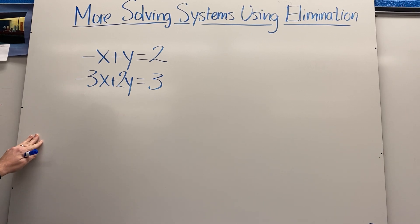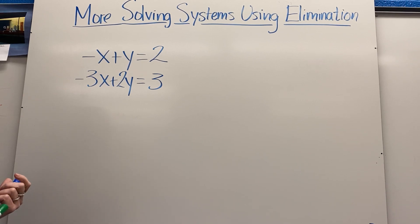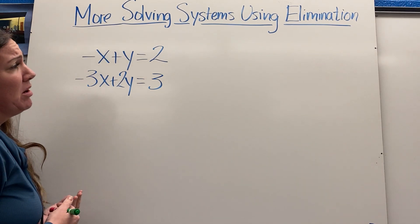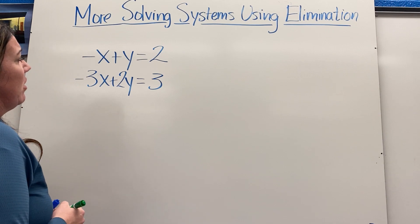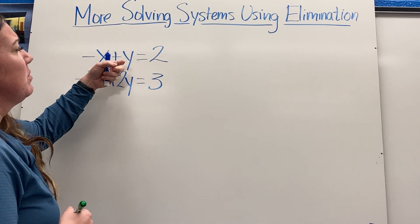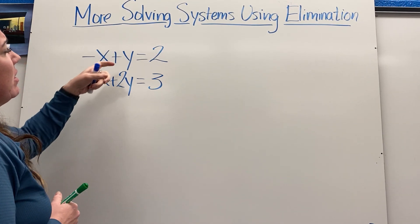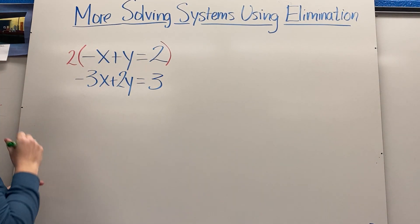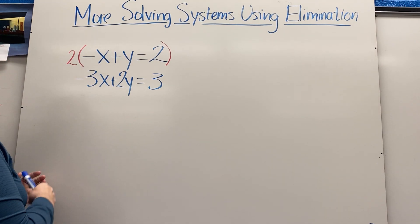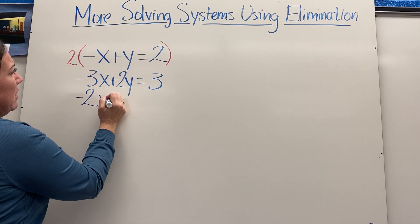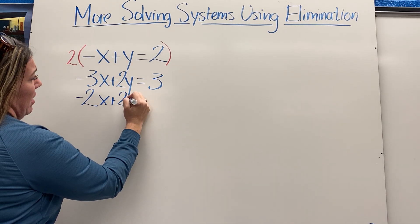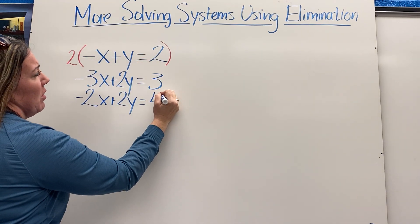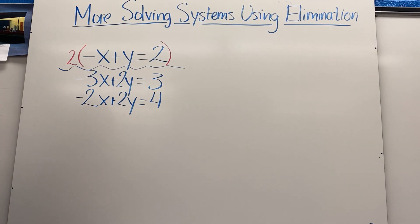Looking at negative x plus y equals 2 and negative 3x plus 2y equals 3, it comes down to your preference for elimination. I'm going to multiply the top equation by 2, so that I get 2y in both equations. Rewriting that equation: 2 times negative x is negative 2x, 2 times y is 2y, and 2 times 2 is 4. Now I've manipulated the equation and I'm set up to eliminate.